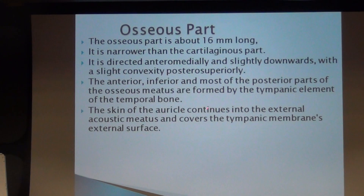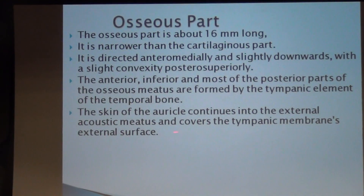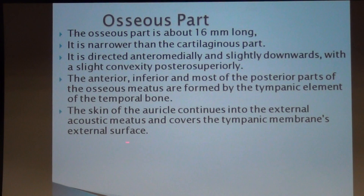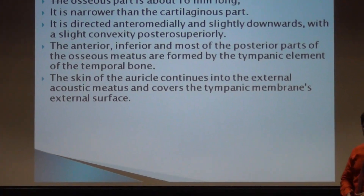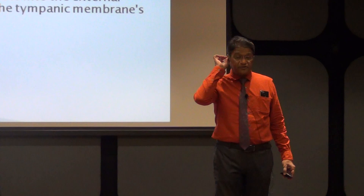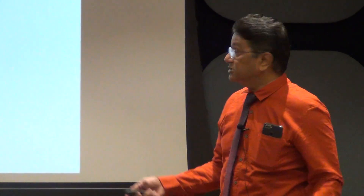The skin of the auricle continues with the external acoustic meatus and covers the tympanic membrane's external surface. The skin covering the external ear - the pinna - is continuous inside, covering the whole canal, and also gets reflected over the lateral surface of the tympanic membrane.